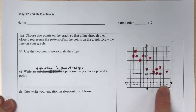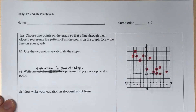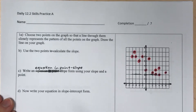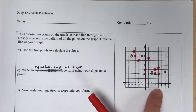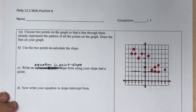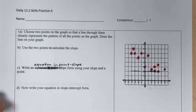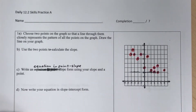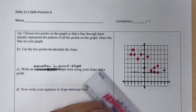For the first question, it says choose two points on the graph so that the line through them will closely represent the pattern of all the points. When you draw your line, make sure it flows with the pattern of the data — going down as it goes to the right — and find two points so that roughly half the points will be above the line and half below.